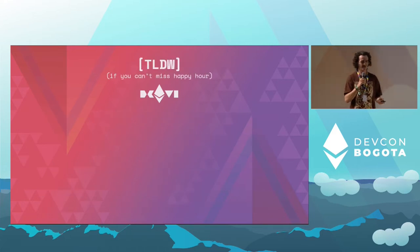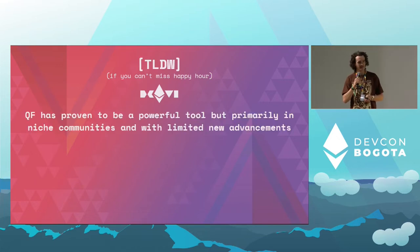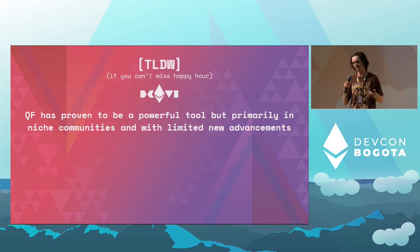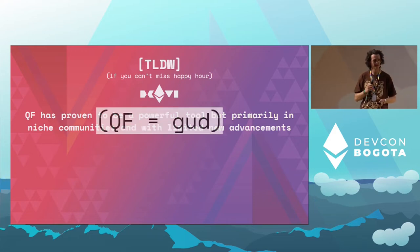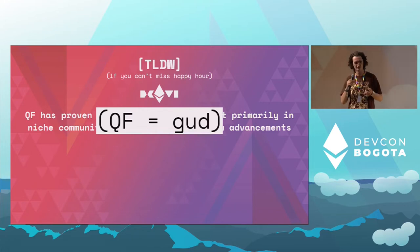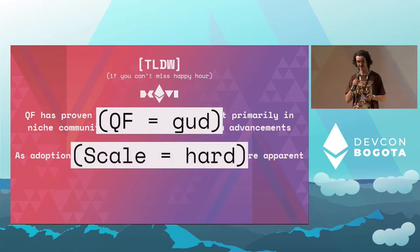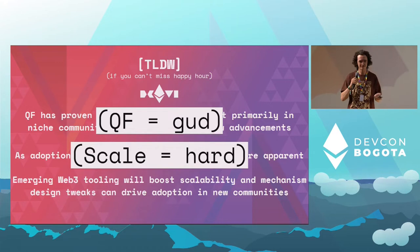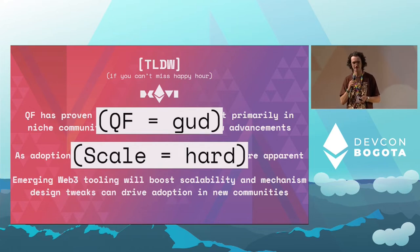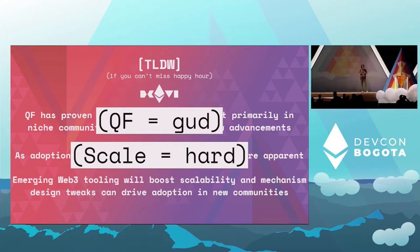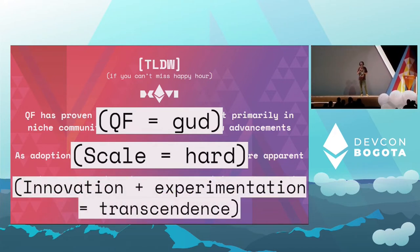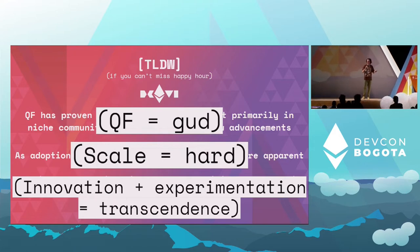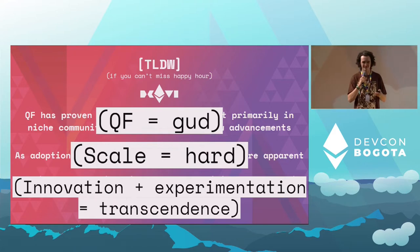The too-long-didn't-watch for people heading out to happy hour: quadratic funding has proven to be a powerful tool, but primarily in niche communities like Web3, with few new advancements over the past few years — QF is good. As adoption has grown, problems are becoming more apparent. Scale is hard. Things like decentralized identity and community curation tools will boost scalability, and tweaks to the mechanism design can help drive adoption as communities tailor QF to their specific needs. We're going to call that innovation and experimentation equals transcendence. That's the high-level overview.